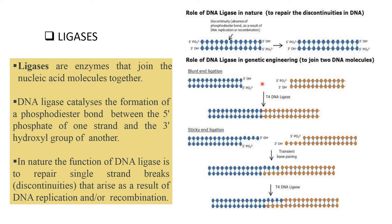Regarding the role of DNA ligase in nature: DNA ligase is an enzyme that joins two nucleic acid molecules together. DNA ligase catalyzes the formation of a phosphodiester bond between the 5' phosphate of one strand and the 3' OH group of another. In nature, the function of DNA ligase is to repair single-stranded breaks that arise as a result of DNA replication or recombination.